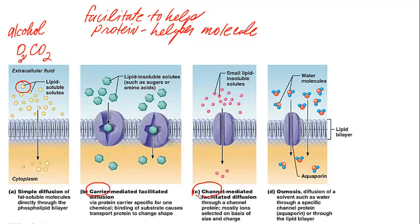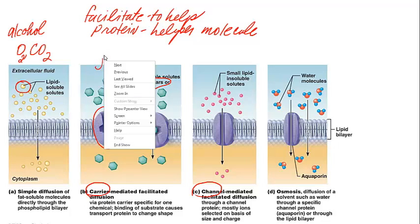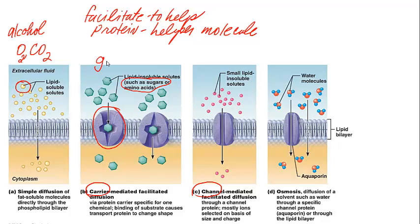In carrier-mediated facilitated diffusion, there are integral proteins — proteins that cross the entire membrane — and they are specific for polar molecules or other classes of molecules. Things like sugars and amino acids would utilize facilitated diffusion. A good example is glucose being transported across the membrane. It needs a little help, but it's still passive — molecules still go from high concentration to low concentration.